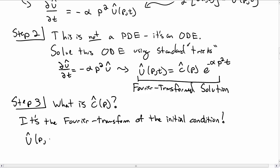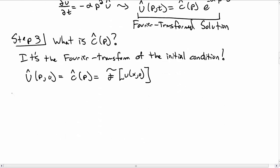So u hat at p comma zero, which is just c hat of p, plugging it into our solution above, is the Fourier transform of u at x comma zero. So what we really need to do is Fourier transform our initial condition.